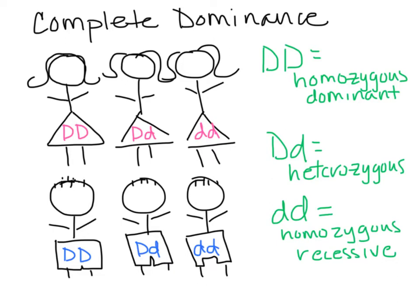So first of all we have a mom and a dad. Here are all the possible moms for one given trait, in this case denoted with the letter D — so one gene, one trait. You can think of it as the floppy ear trait, or the hitchhiker's thumb, or the widow's peak forehead — whatever trait, one trait, one gene. And here are all the possible dads for that trait, that gene.